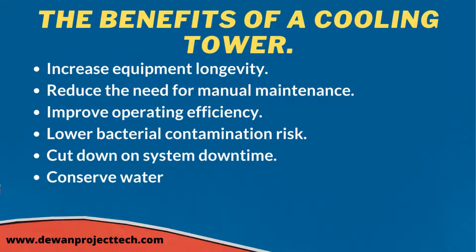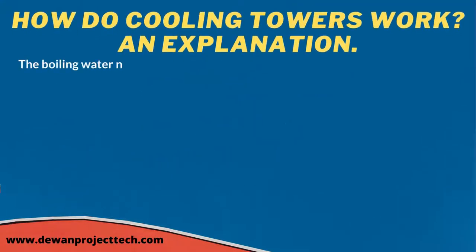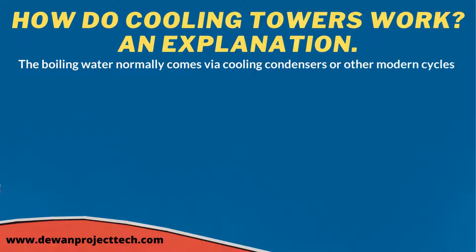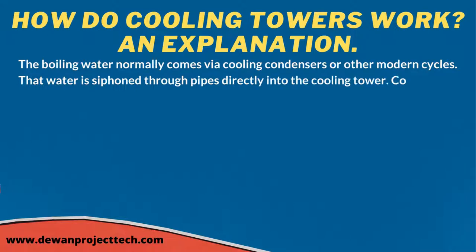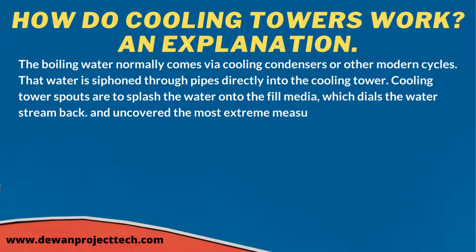To conserve water and cut chemical costs — how do cooling towers work? The hot water normally comes via cooling condensers or other process cycles. That water is pumped through pipes directly into the cooling tower. Cooling tower nozzles splash the water onto the fill media, which slows the water stream down and exposes the maximum water surface area for optimal air-water contact.